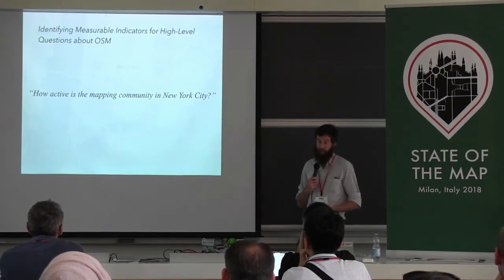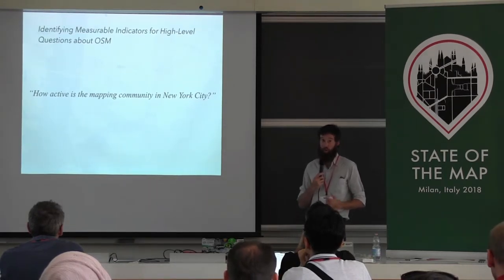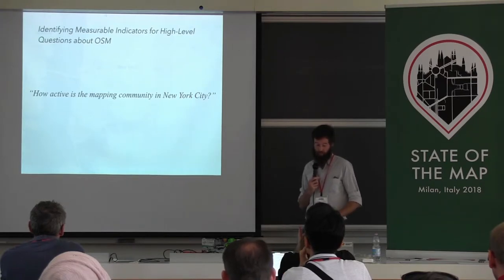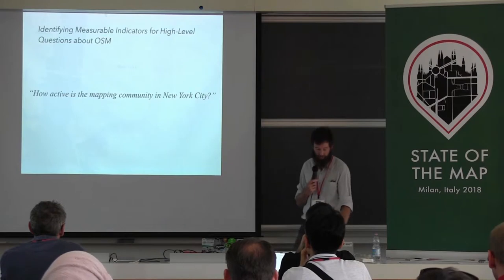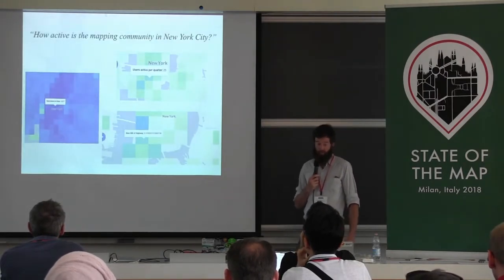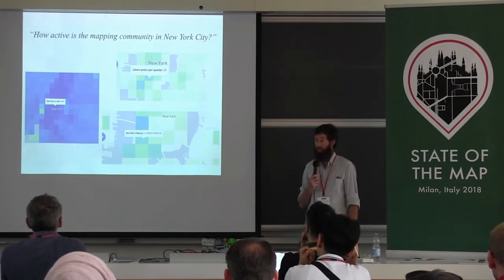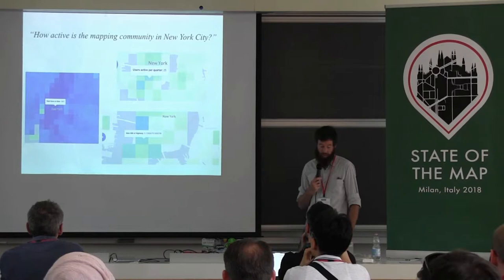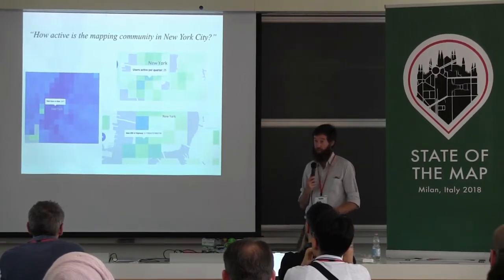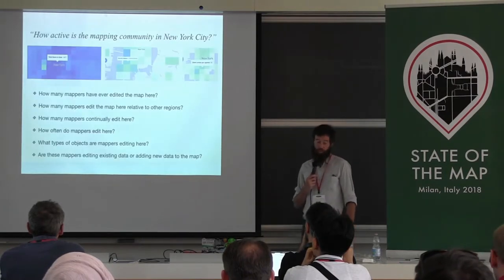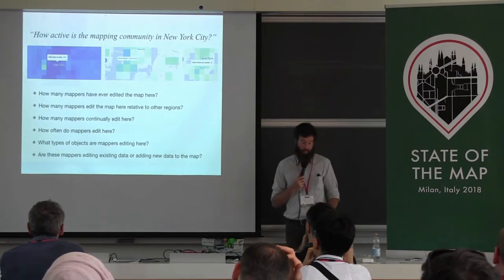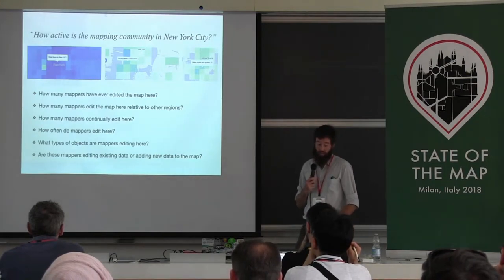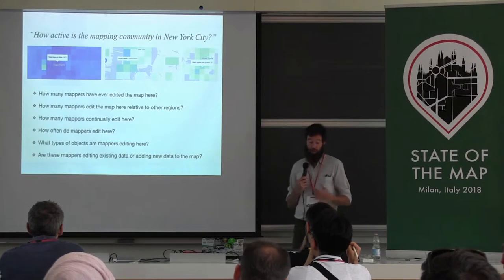Beyond contextualizing the editing histories of the map and the contributors, we need to qualify exactly what it is that we're measuring. I make a distinction between questions and the indicators that can be measured. Take this seemingly simple question: how active is the mapping community in New York City? This question is not possible to simply measure — there is no single activity attribute in the database that we can query. However, here are some measurable metrics: over 1,800 users have ever edited in New York City, and in winter 2017, there were about 20 users editing per square kilometer. Only by explicitly identifying the indicators being measured and how they relate to the larger questions can we perform robust, reproducible analysis.